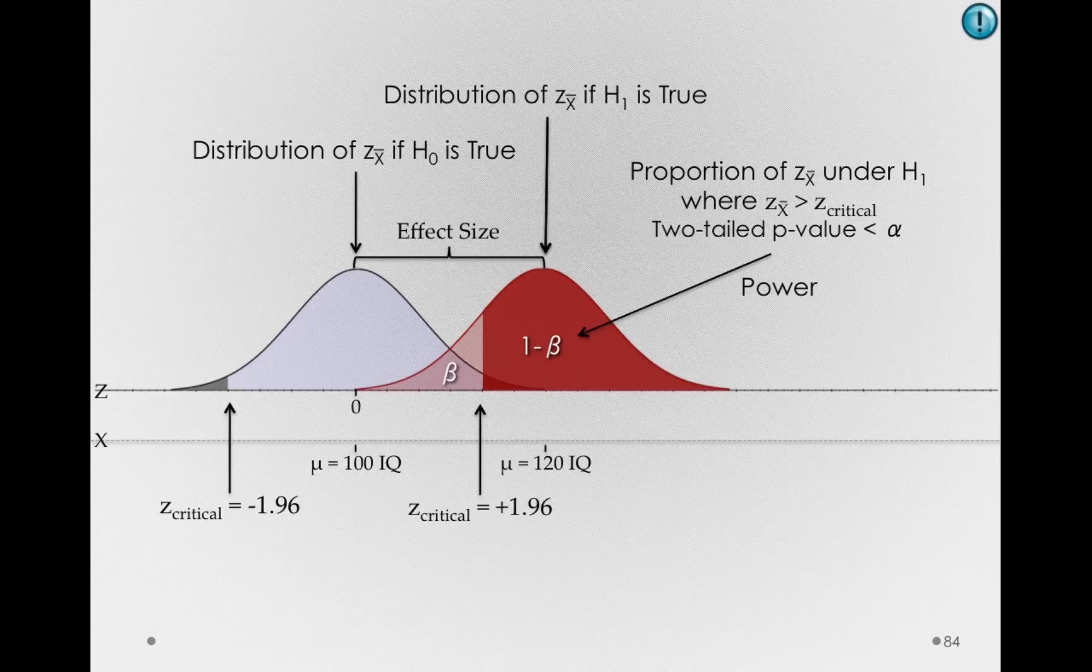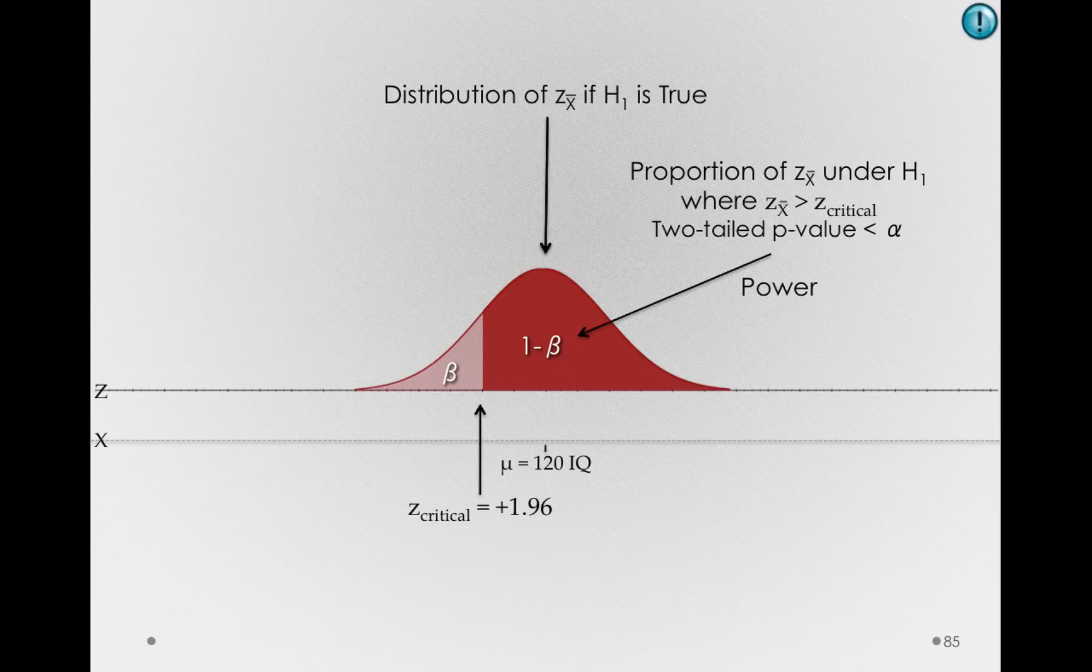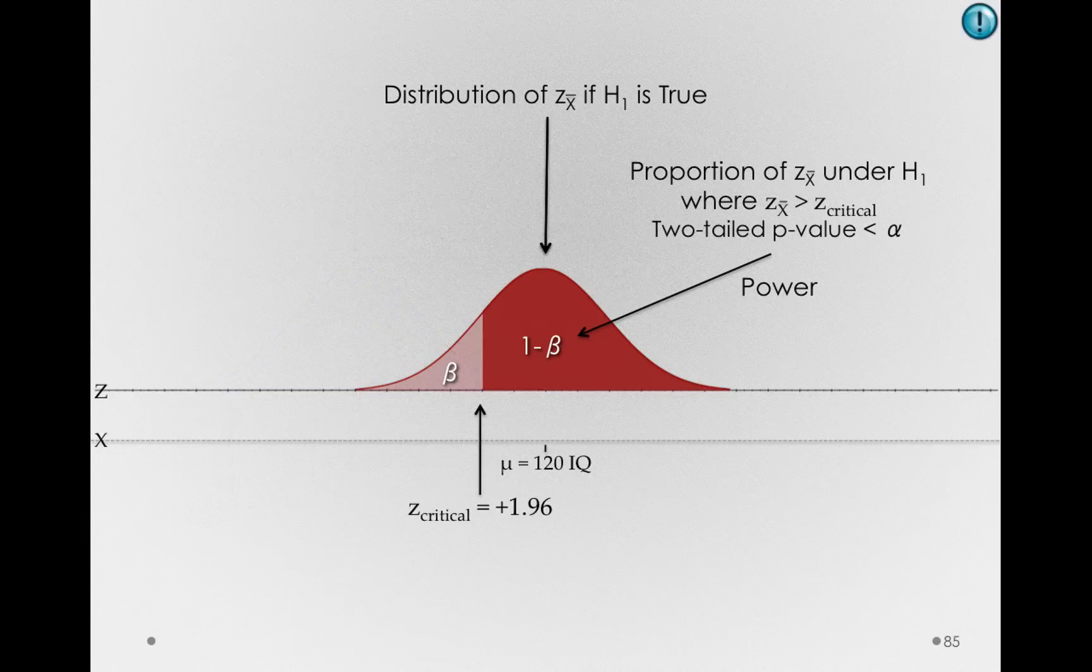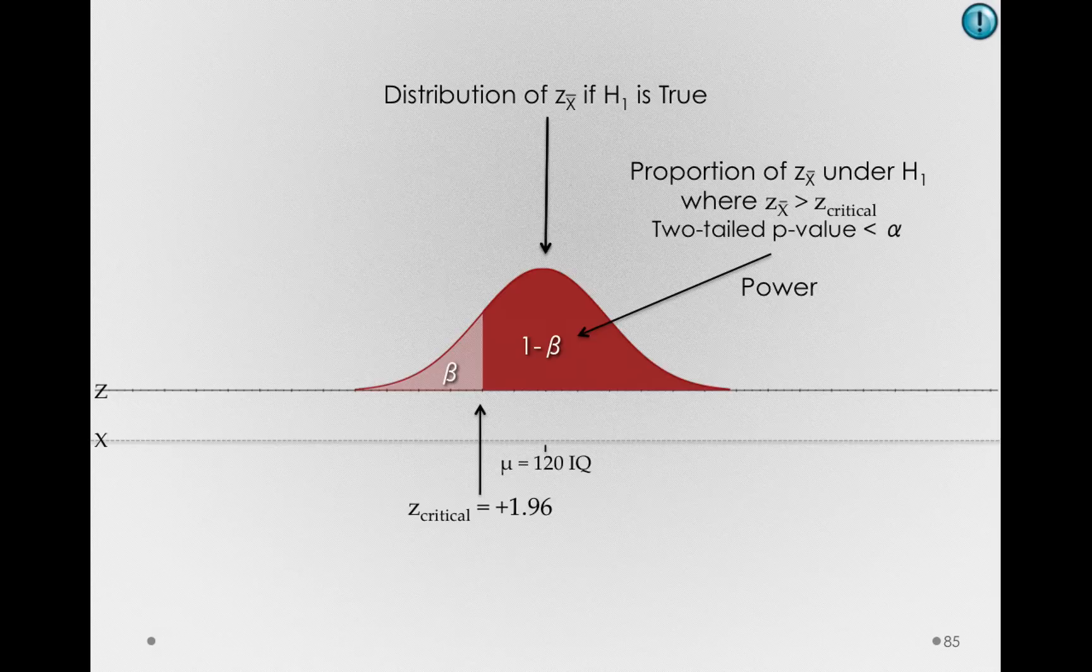Now notice, I have both of the distributions shaded here, but we can remove completely the distribution under the null hypothesis. This is the distribution where our sample is coming from. The reason I left up that other distribution is because that's how we decided on our critical value. That's how we decided what would count as evidence. But in reality, this is the sampling situation we're in if there's a true effect. If there's a true effect, our sample is coming from the distribution under the alternative hypothesis.